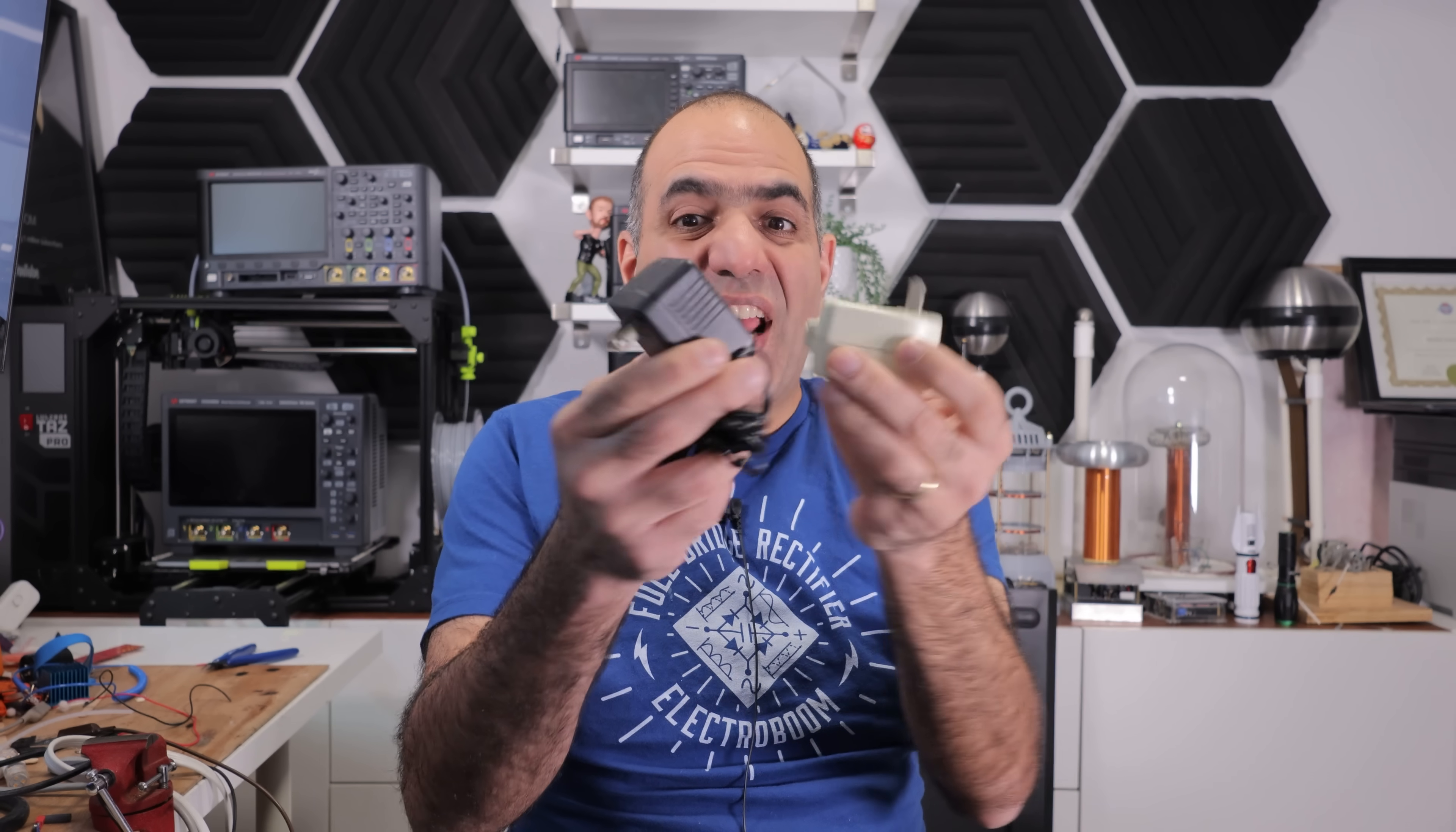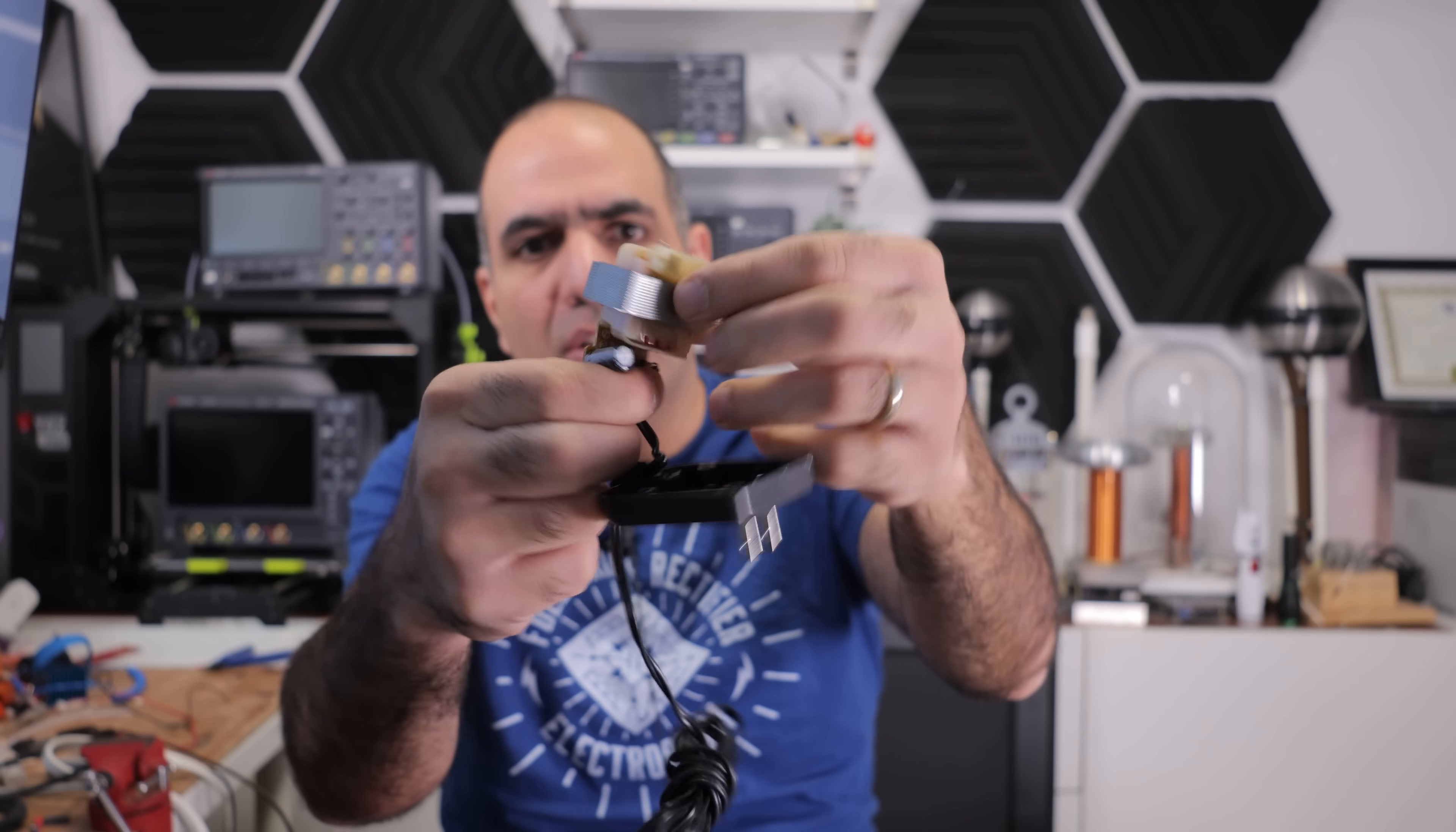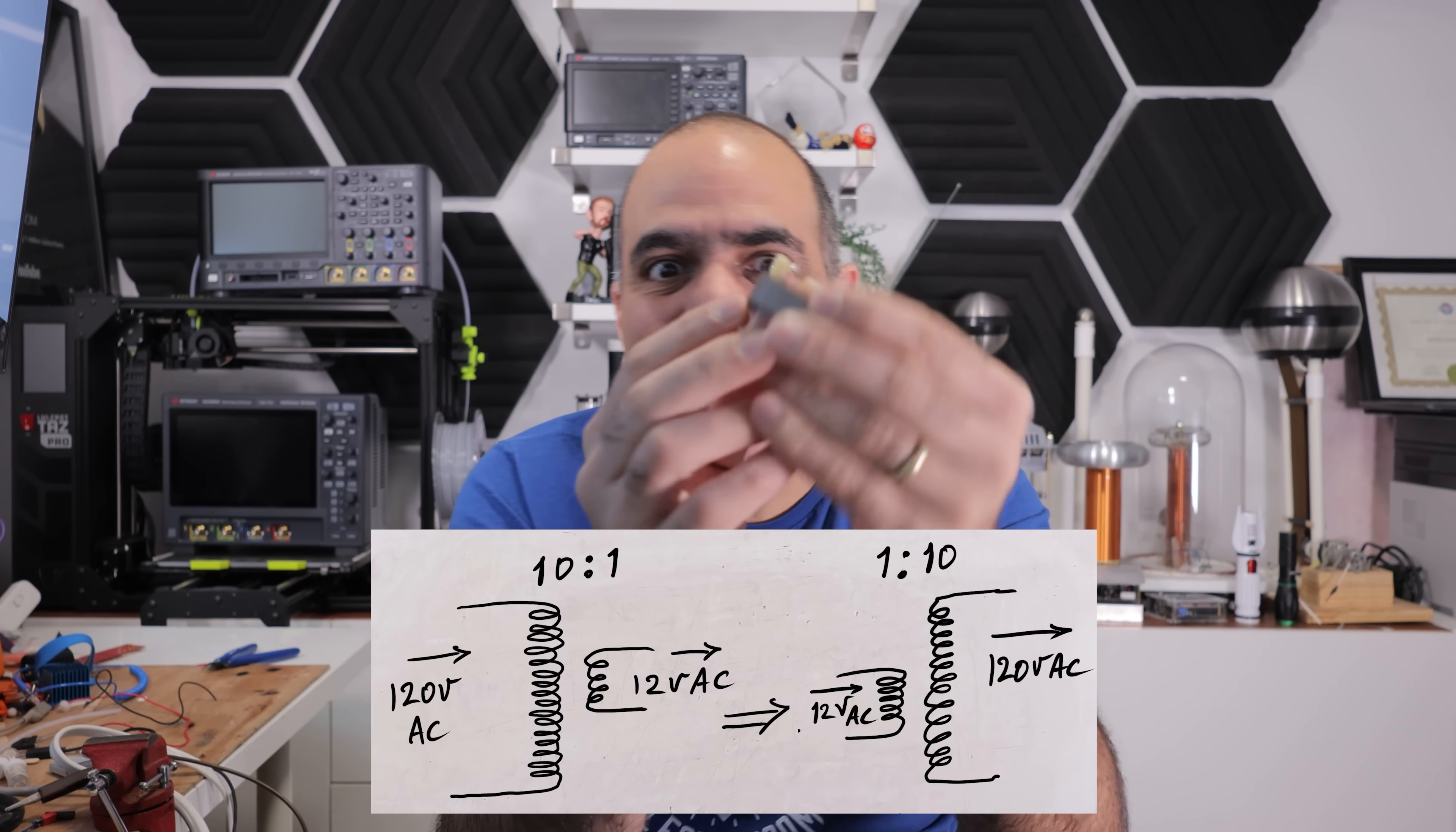If you have these old transformer wall adapters, don't throw them into garbage. You can always harvest the transformer out of it like this guy here that steps down 120 volts to 12 volts. We don't need the rectifier and capacitor though. We disconnect it. So to create 120 volts from 12 volts we just have to flip the usage of the primary and secondary.